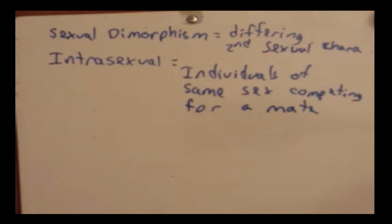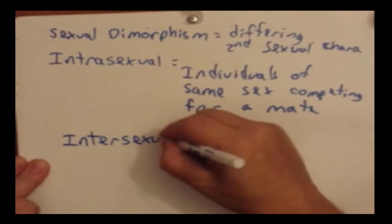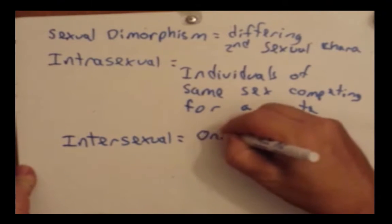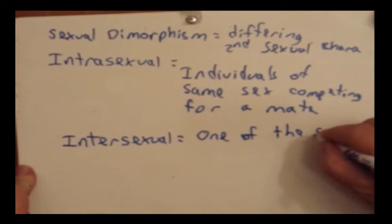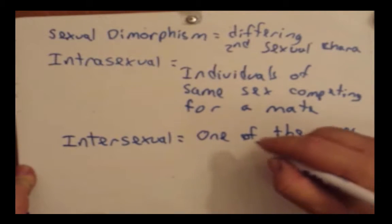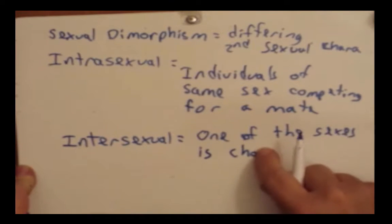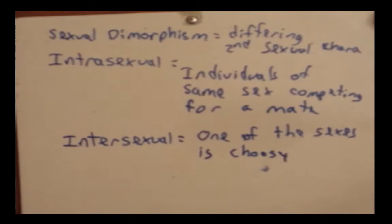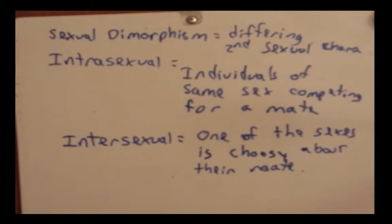The next concept is called intersexual selection. This is when one of the sexes is choosy about their mate. To talk about this, let's go back to our pictures of the peacock and the peahen.